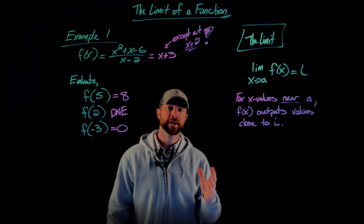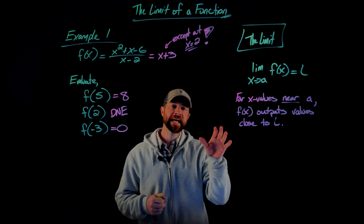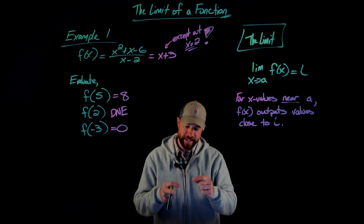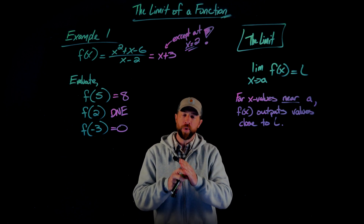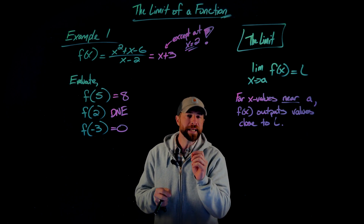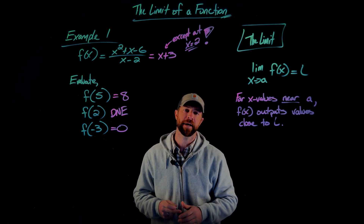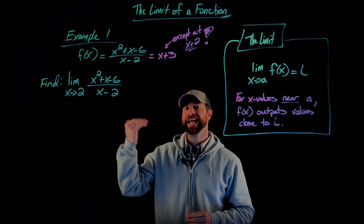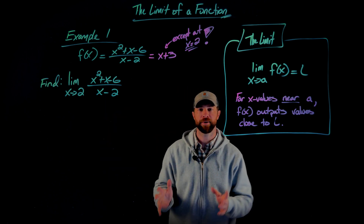A really important thing to emphasize is that this has nothing to do with what's happening at a. We only care about what's happening very, very close to that x value, not directly at it. So the question I'm posing is: what is the limit as x approaches 2 of x squared plus x minus 6 over x minus 2?